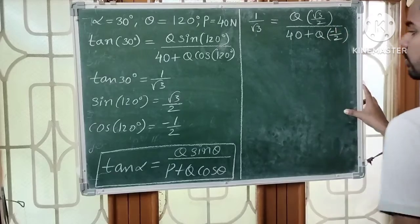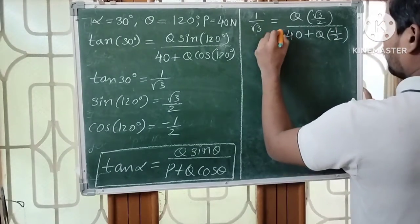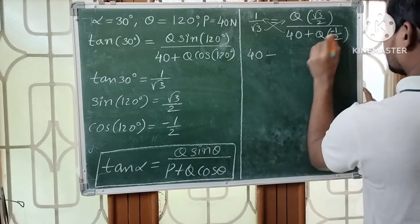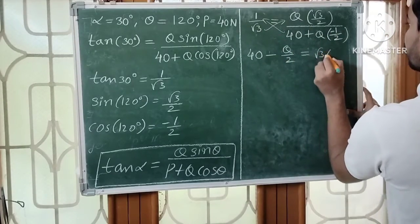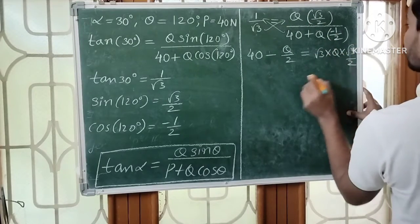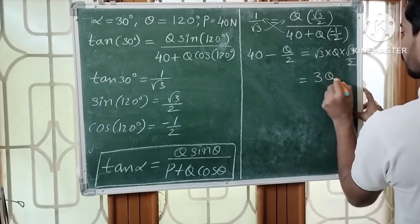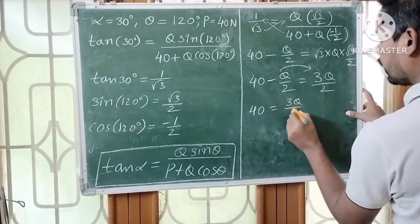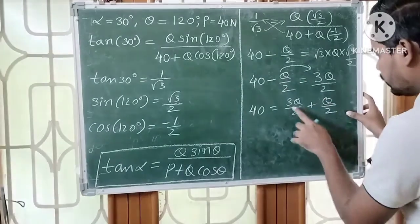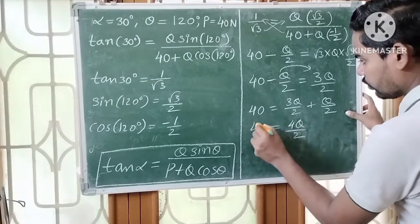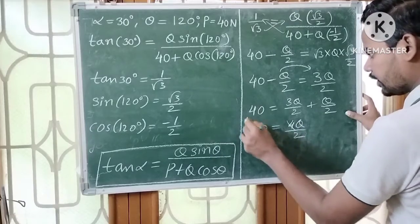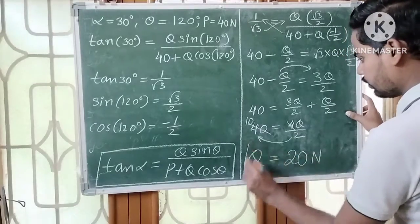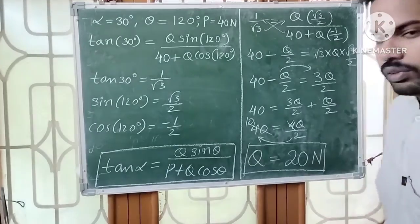Applying cross multiplication: 40 minus Q over 2 equals root 3 times root 3 Q over 2, giving 3Q over 2. So 40 equals 3Q over 2 plus Q over 2, which is 4Q over 2. Therefore 40 equals 2Q, so Q equals 20 Newtons. Therefore the magnitude of the smaller force is 20 Newtons.